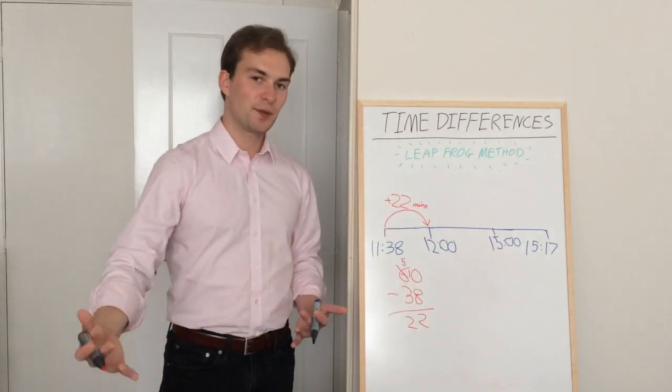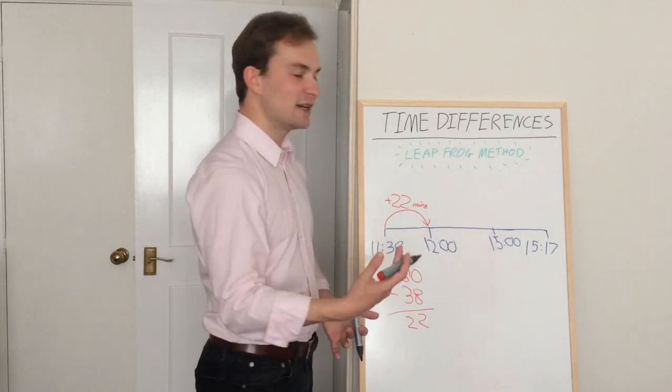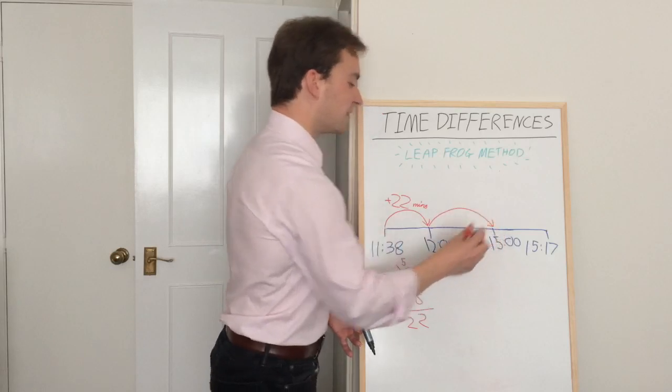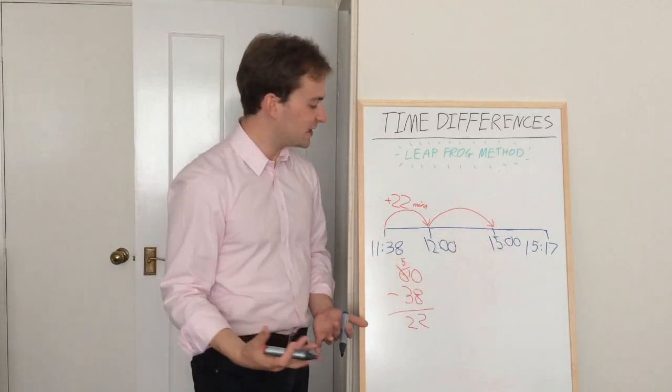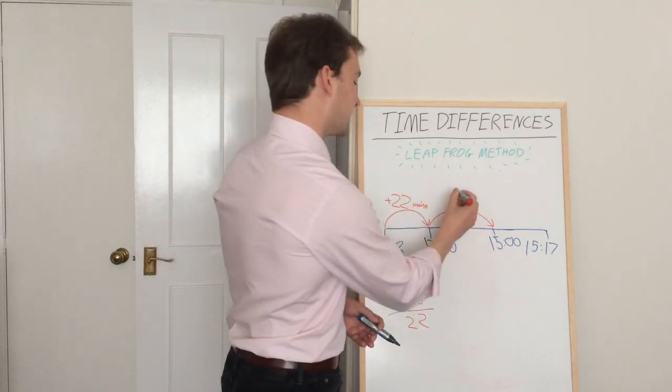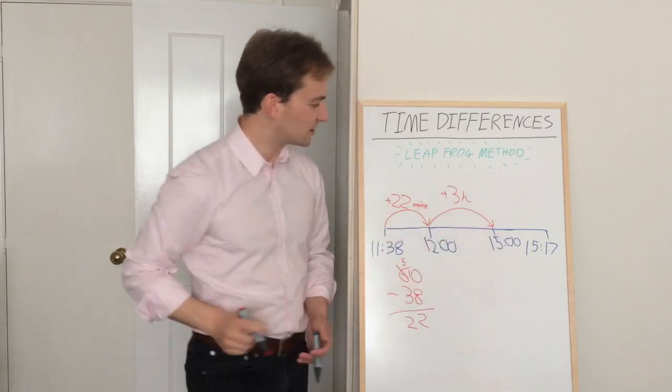Next bit, a bit easier. We're going to go from 12 o'clock to 1500 hours. So again, fairly straightforward, we're going to make another jump. This one we can probably do in our heads quite easily, so 12 to 15 taken away, we get three hours, or three H, like that.